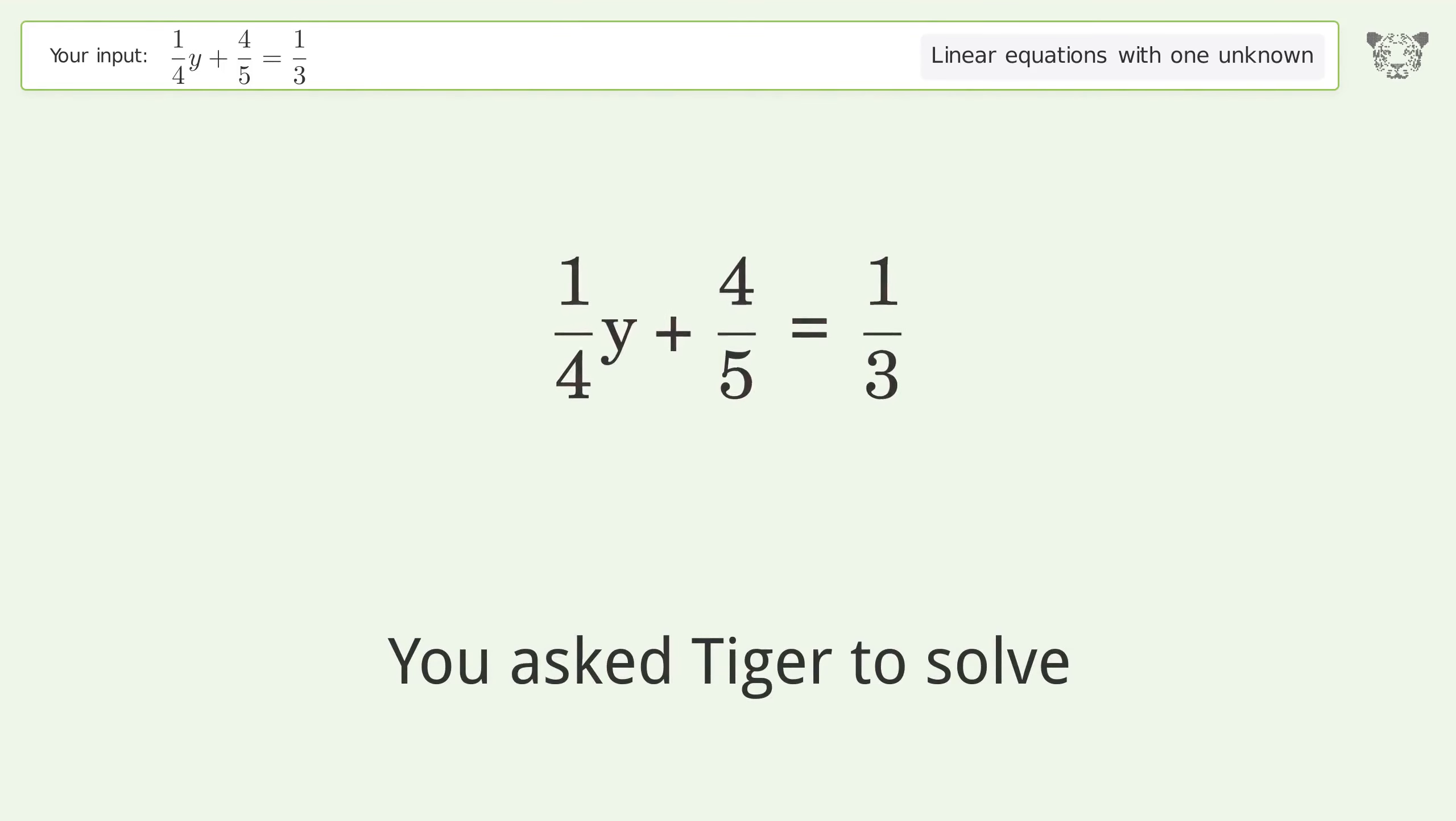You asked Tiger to solve this. This deals with linear equations with one unknown. The final result is y equals negative 28 over 15.